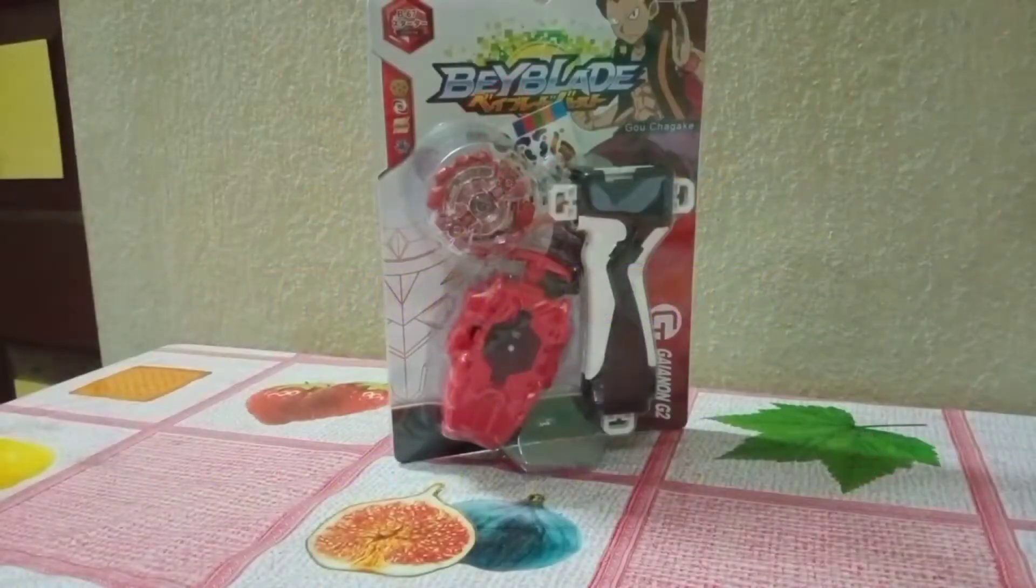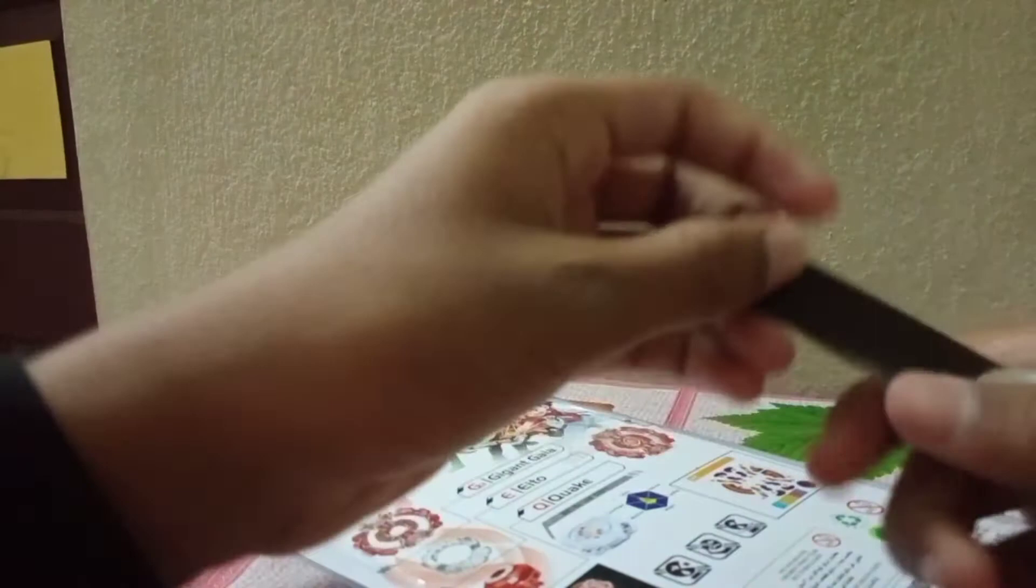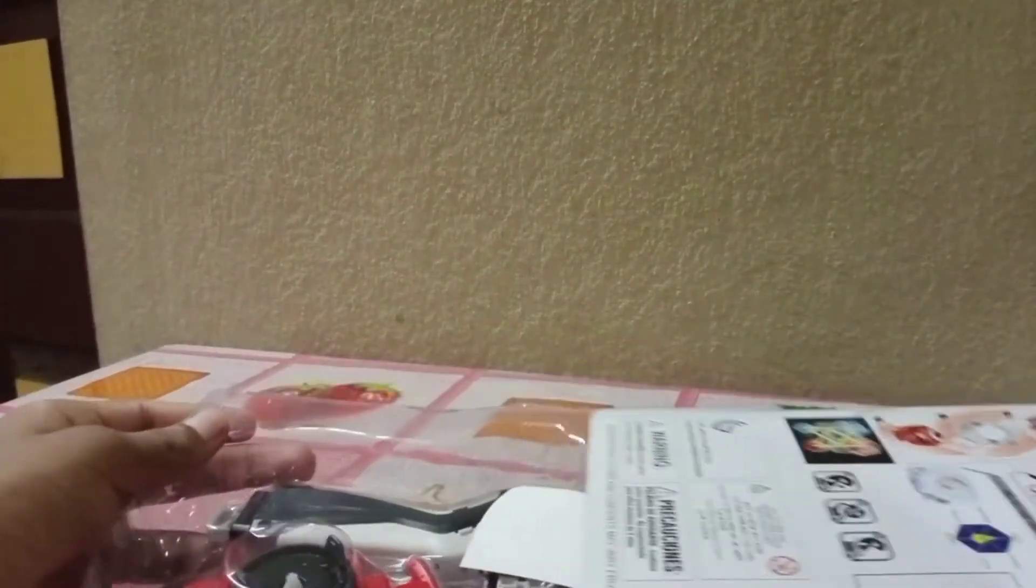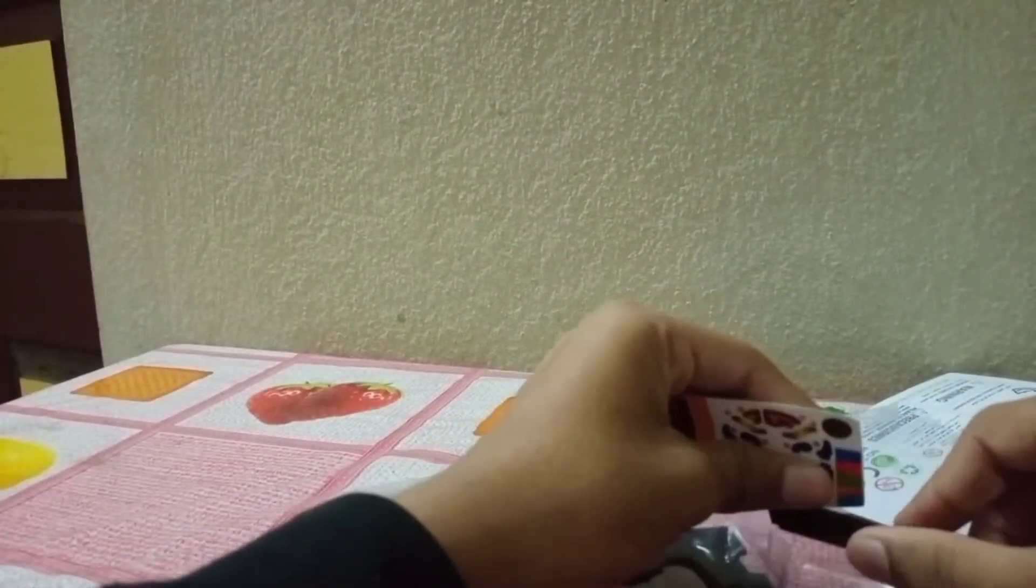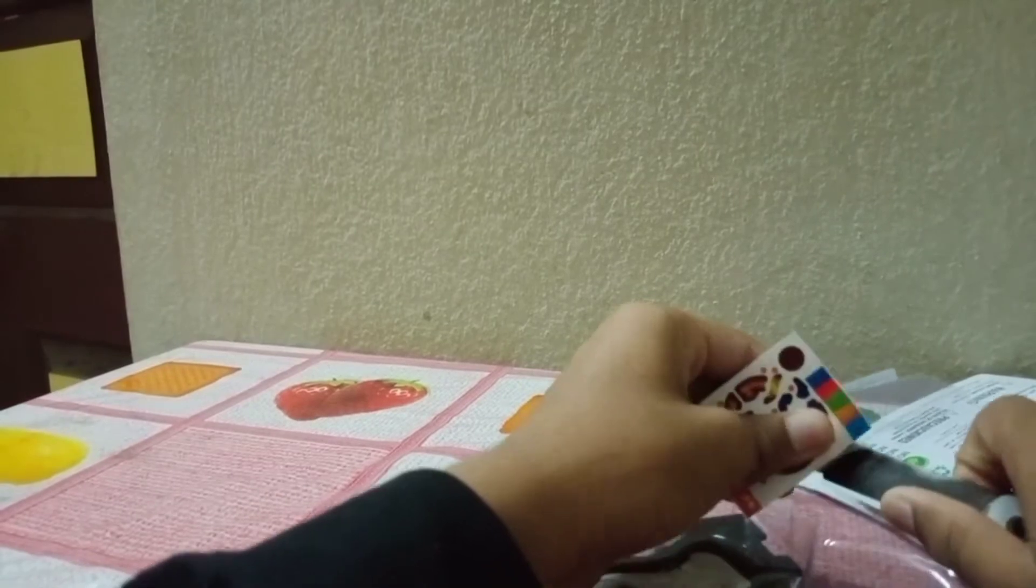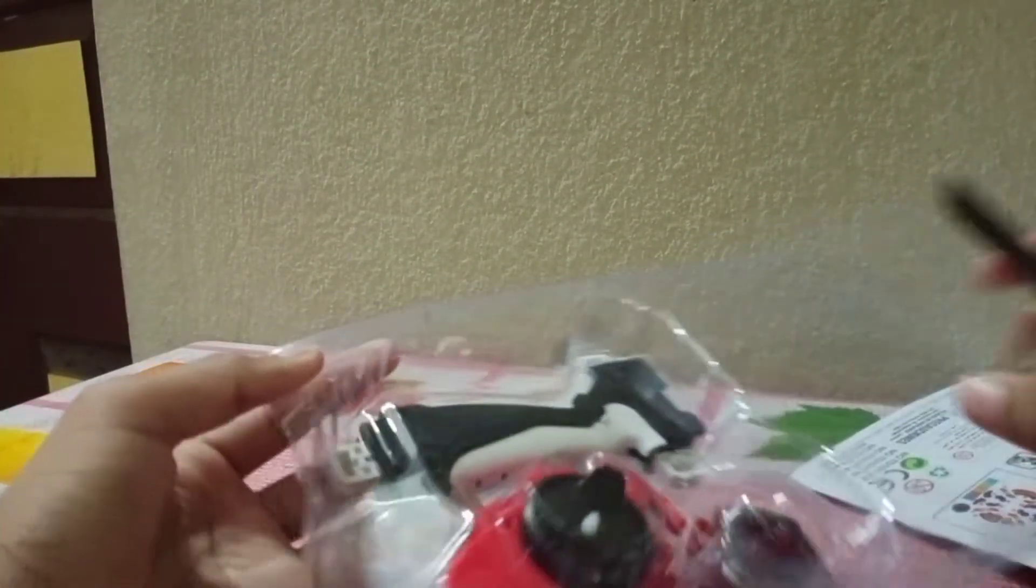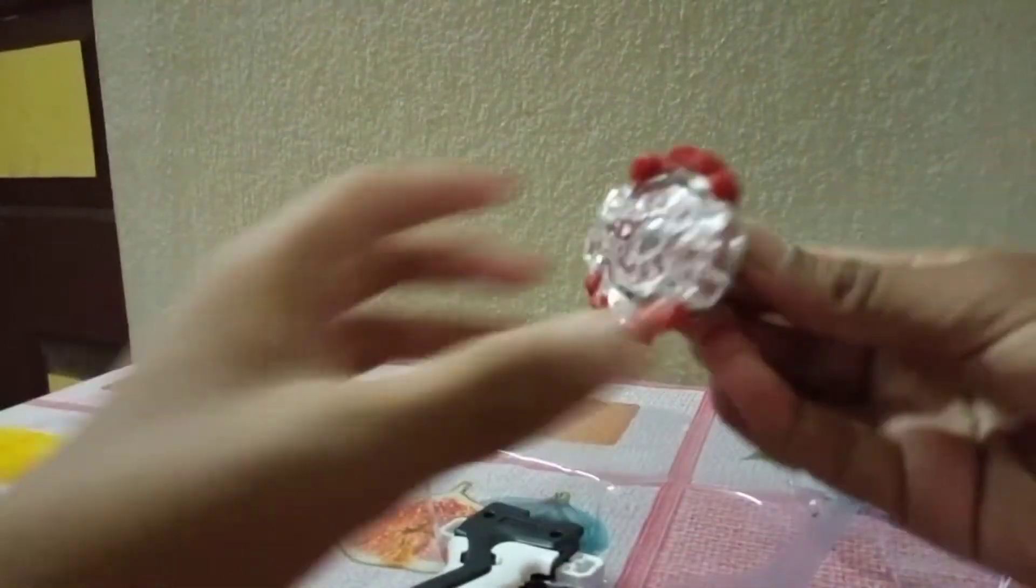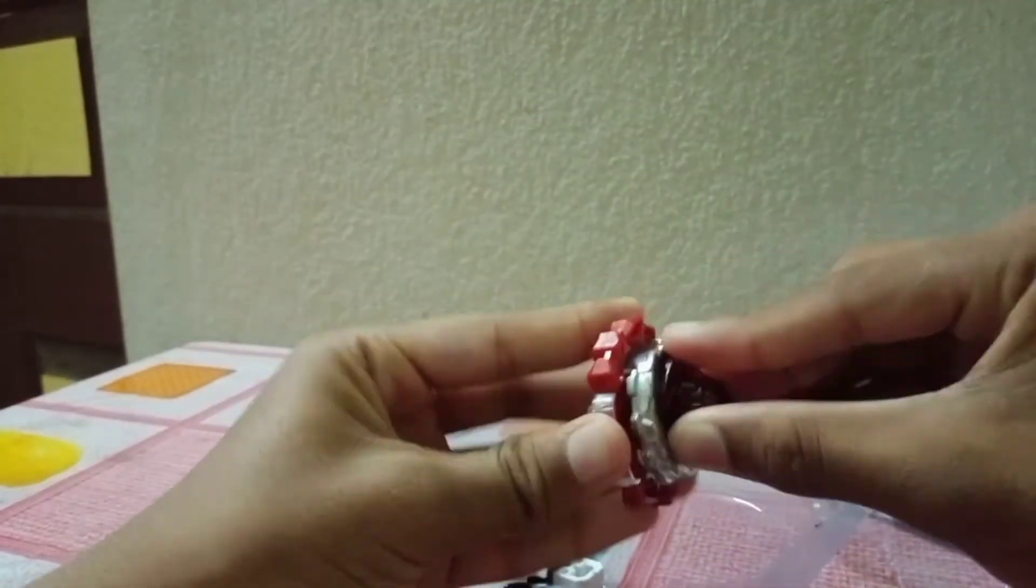So yeah guys, let's unbox it. Here is the sticker sheet. Let's open this wall. So here we have our bey which is Gynon.